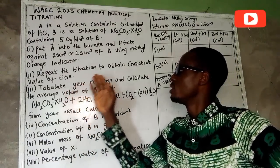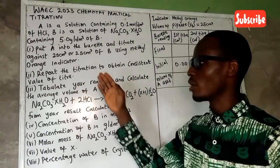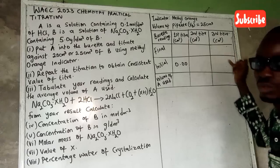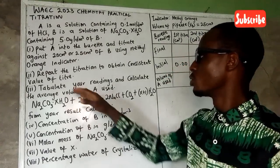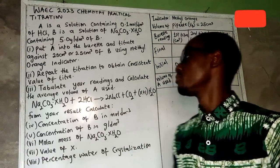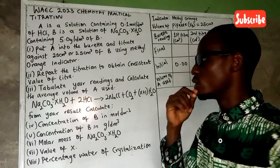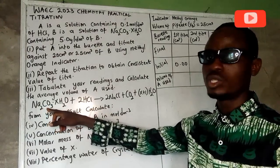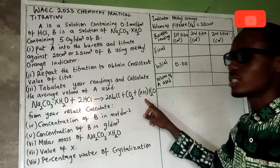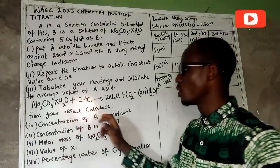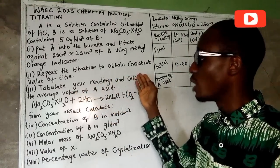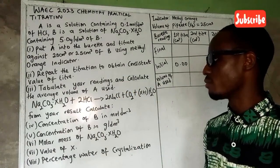We are to repeat the titration to obtain consistent values, doing it three times. I've drawn the table already. After every titration I will record my values in the table. The equation of the reaction is: Na₂CO₃·xH₂O + 2HCl → 2NaCl + CO₂ + (x+1)H₂O. From the result of the experiment we calculate the average volume of the titrant, then find the concentration of B in mol per dm³.